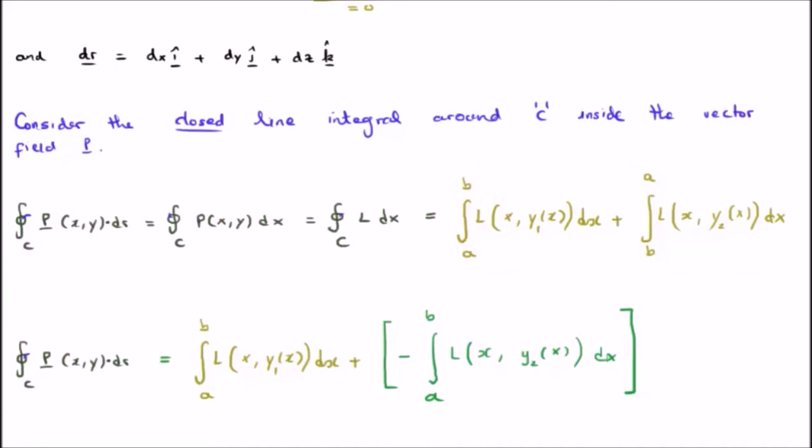Now, it's always useful to have integrals with the same limits because you can bring them together. So, we note that we have a to b here, but we have b to a here. So, if we negate the second integral, we can actually swap the limits.